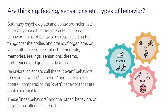On the other hand, many psychologists and behavioral scientists, especially those interested in human behavior, think of behavior as also including the things that the bodies and brains of organisms do which others can't see. For humans, that includes thoughts, memories, feelings, sensations, dreams, preferences, and goals that we experience inside of us. These are sometimes called covert behaviors — covered or secret and not visible to others — compared to the overt behaviors that are public and visible. These inner and outer behaviors influence each other.